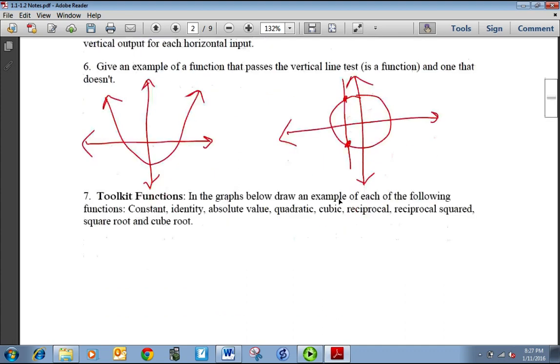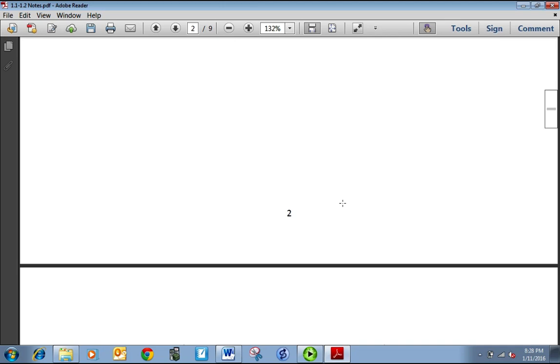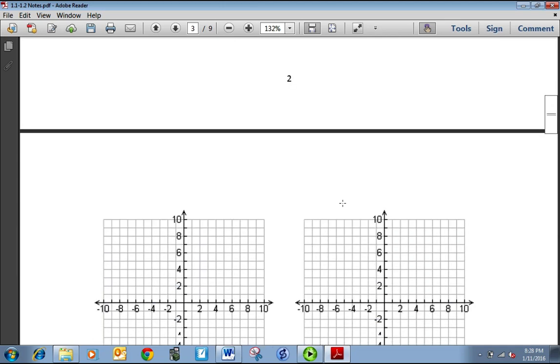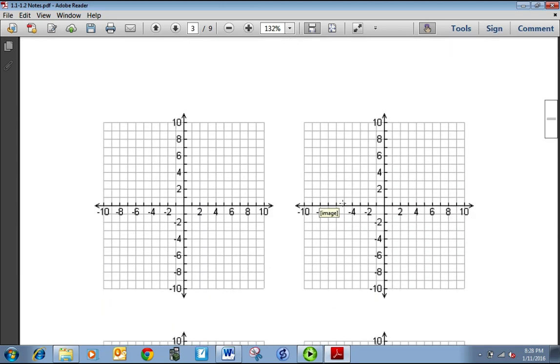Your toolkit functions. It's good to know what the, I think there's eight basic functions that we use pretty regularly in this course. And you want to be able to identify what they are. So the first one I'm going to draw is called the identity function.